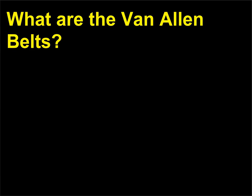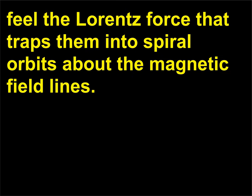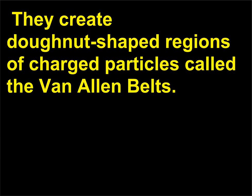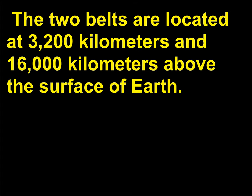What are the Van Allen belts? Charged electrons and protons from solar wind and cosmic rays entering Earth's magnetic field feel the Lorentz force that traps them into spiral orbits about the magnetic field lines. They create donut-shaped regions of charged particles called the Van Allen belts. The belts are concentrated around the equator and become thinner as they approach the poles. The two belts are located at 3,200 kilometers and 16,000 kilometers above the surface of Earth.